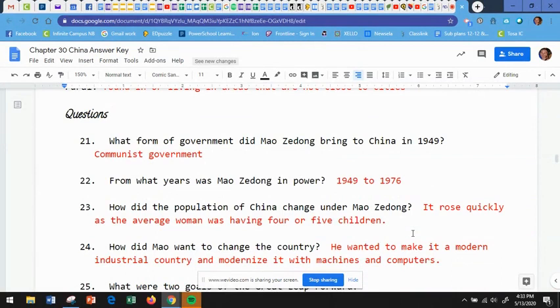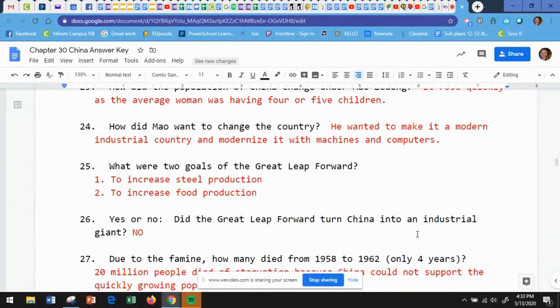And then our questions for section 30.3. Number 21, what form of government did Mao Zedong bring to China in 1949? A communist government. Number 22, from what years was Mao Zedong in power? 1949 to 1976. So that's quite a while. Number 23, how did the population of China change under Mao Zedong? It rose quickly as the average woman was having four or five children. Number 24, how did Mao want to change the country? He wanted to make it a modern industrial country and modernize it with machines and computers.